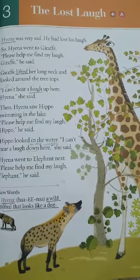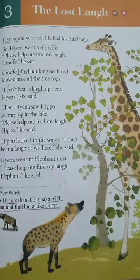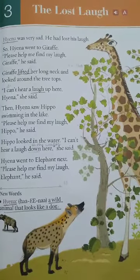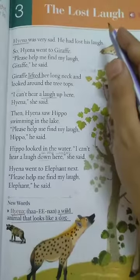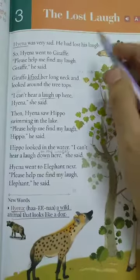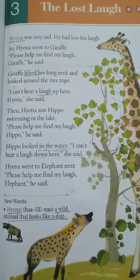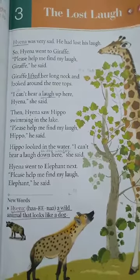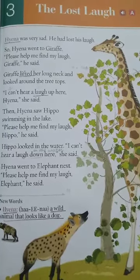Good morning class 2. Here is your English literature class and today we are going to do the revision of chapter 3, The Lost Love. So today we are going to do the revision of the exercises of this chapter. Open your books to page number 19.